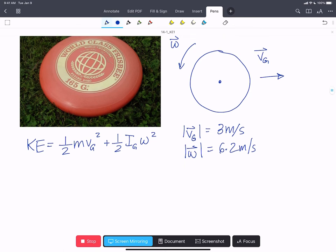So we need to figure out a few things. We're given the mass of 0.165 kilograms or 165 grams, and the radius is going to be one-half of 30 centimeters or 0.15 meters.